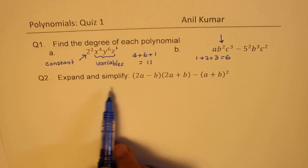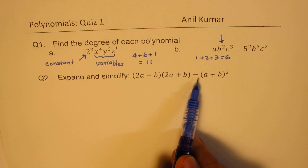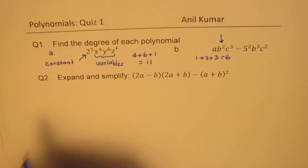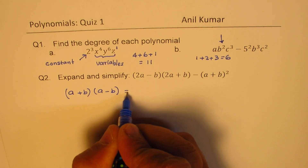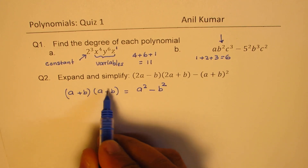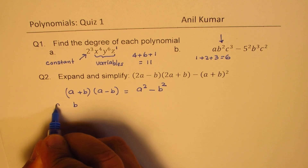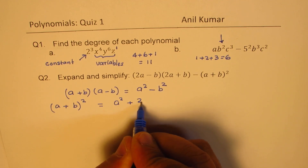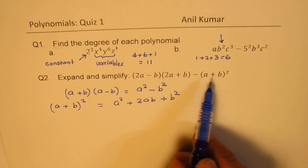Question number two: expand and simplify (2a − b)(2a + b) − (a + b)². For this, you could use the formula. Let me give you the formula here. We have (a + b)(a − b) = a² − b². You can always expand with FOIL and see that result. Also, (a + b)² = a² + 2ab + b². We are going to use these formulas to expand and simplify.